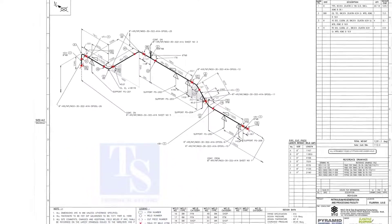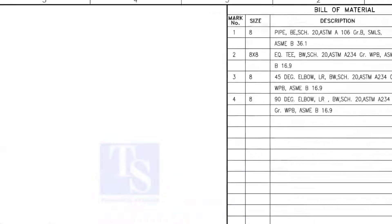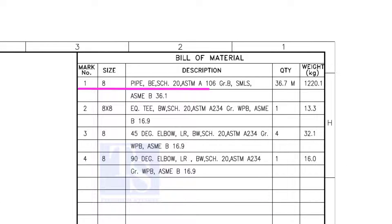Let us have some basic idea of the drawing. Item number 1 is 8-inch pipe, BE is bevel end, Schedule 20. SMLS stands for Seamless. Item number 2 is an equal T, bevel end, schedule 20.